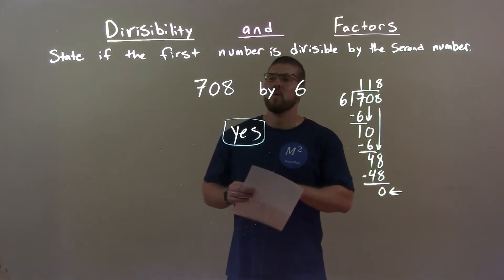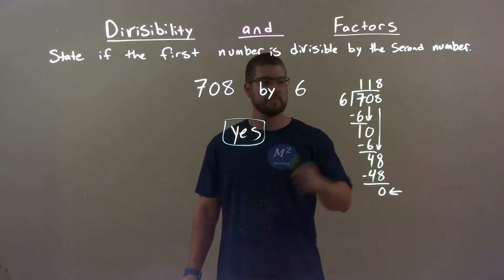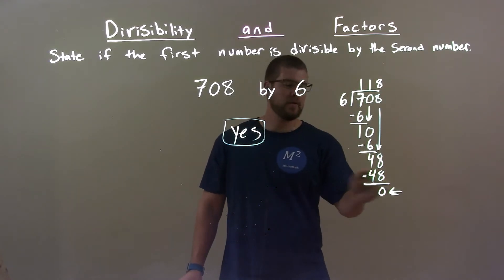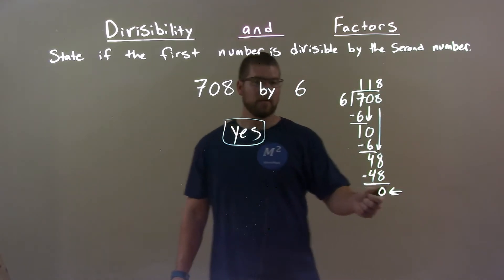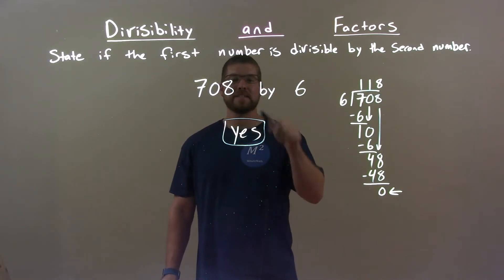Quick recap: we're given 708 and asked if it's divisible by 6. I did long division, 6 into 708. We got 118 with a remainder of 0. The remainder of 0 tells us it goes in evenly, so our final answer is yes.